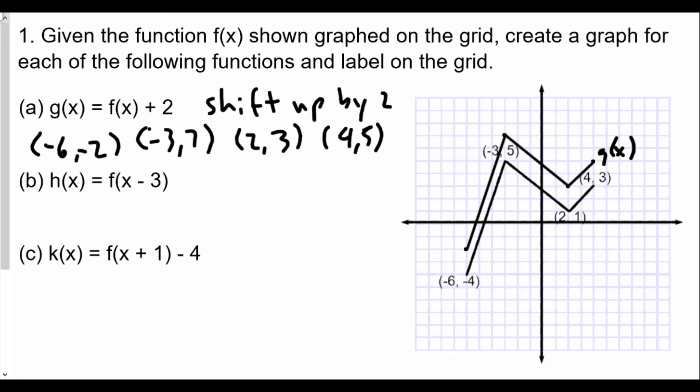Now, h(x) is f(x minus 3). And notice the minus 3 inside, which means we shift right by 3. And so shift right by 3 means, in this case, we're going to add 3 to the x value for each of the important coordinates.